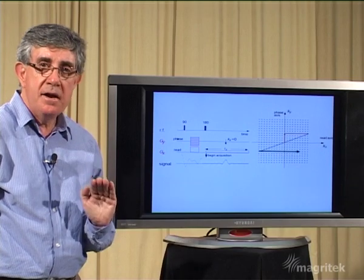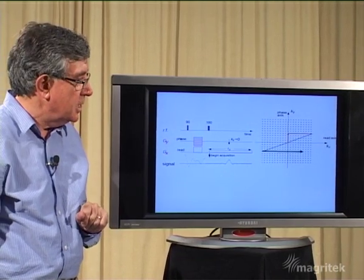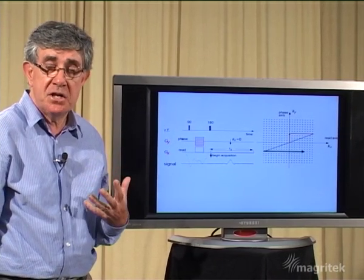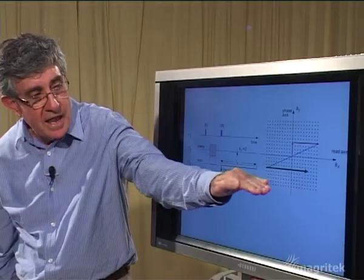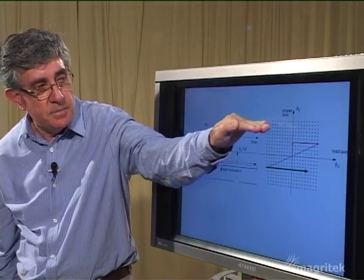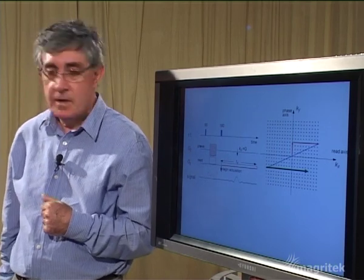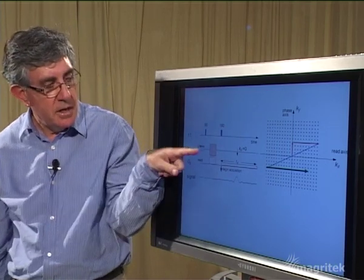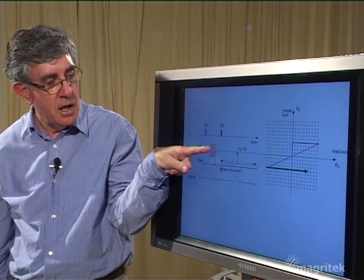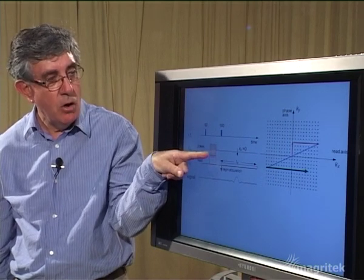That's how we get one line of our matrix. Of course what we need to do is to fill that matrix up to get points along every single line of k-space. So we need to repeat the experiment. And we repeat the experiment using different values of the magnetic field gradient along the y-axis.